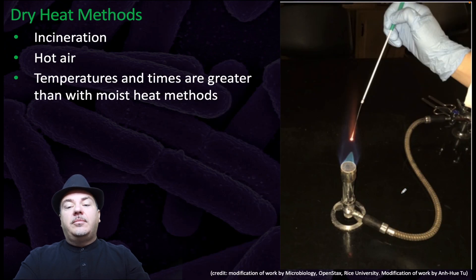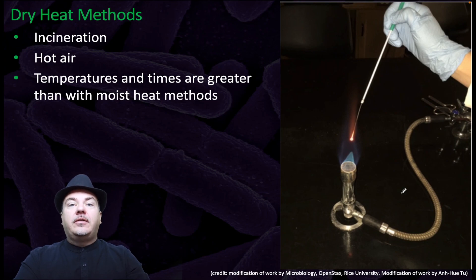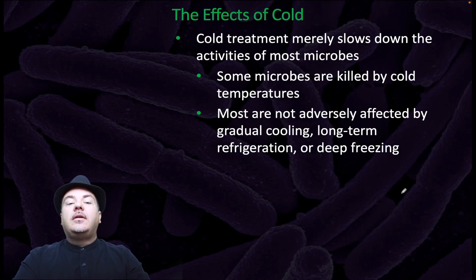Dry heat methods include incineration — for example, when you use bacterial loops to burn off the bacteria on the loops — and hot air. Temperature and times are greater than with moist heat methods.